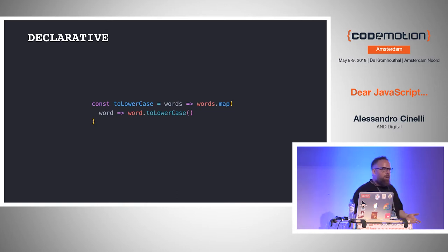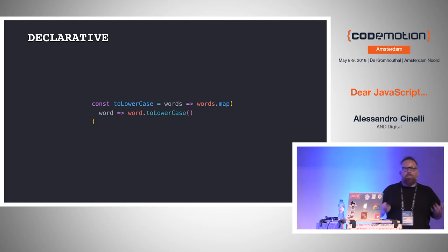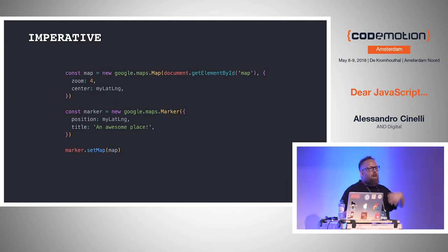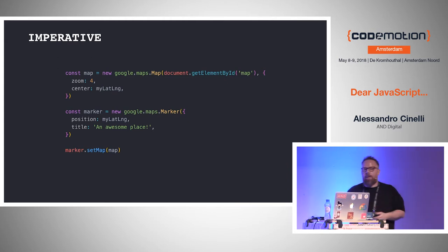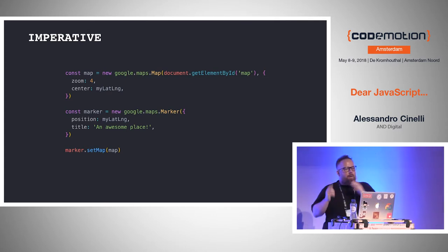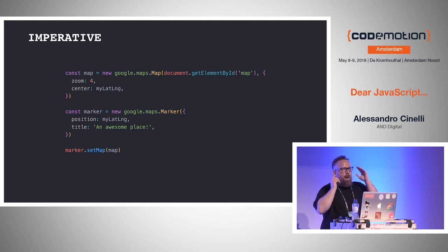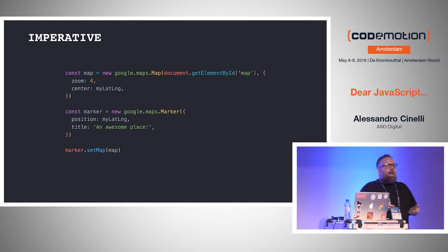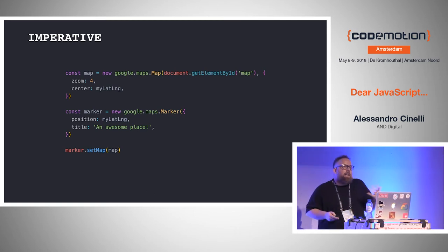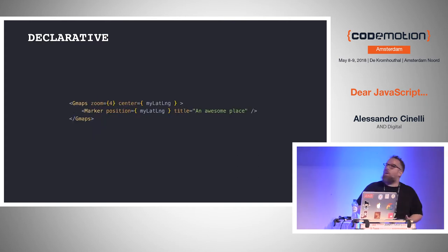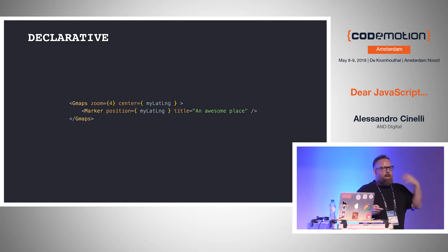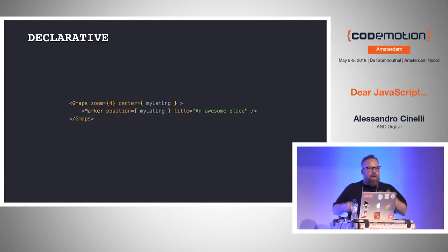These ideas in JavaScript also influence libraries and frameworks. For example, with the Google Maps library you create a map with settings, create a marker, and in an imperative way assign the map to the marker. But other libraries and frameworks use a more declarative approach — like React, where you have a component and just tell it what you need. All the things happening behind the scenes are not exposed to you. It's more declarative.